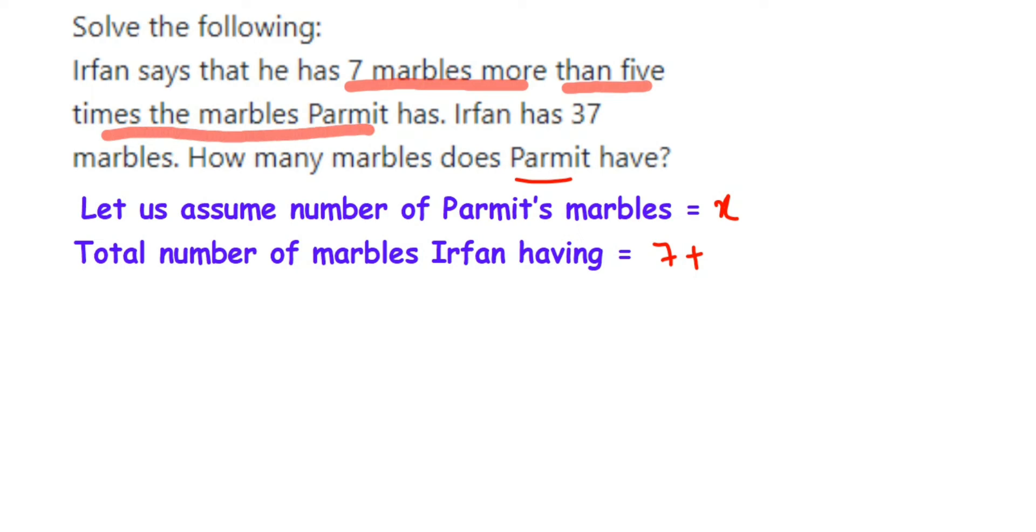7 marbles more than 5 times the marbles Parmit has. 5 times means multiply. So 5 into number of marbles Parmit has. How many marbles is Parmit having? We have assumed that he has x number of marbles. So it will be 5 into x. So 7 more than 5 times of marbles Parmit has, so 7 plus 5 times the number of marbles Parmit is having.